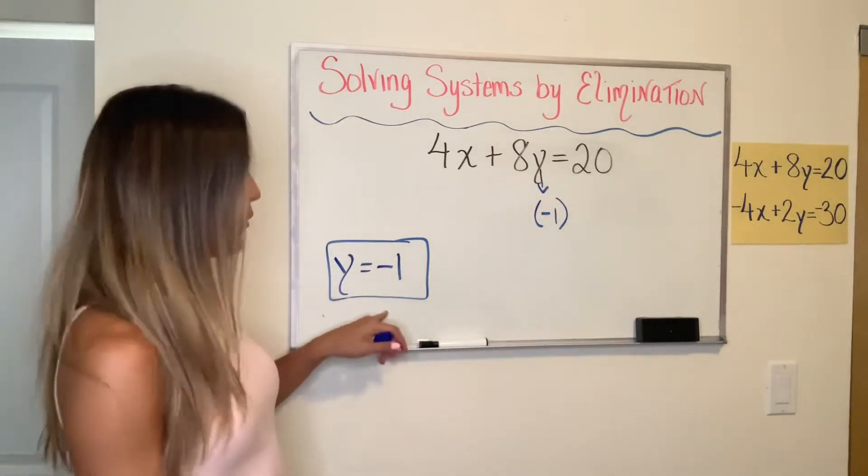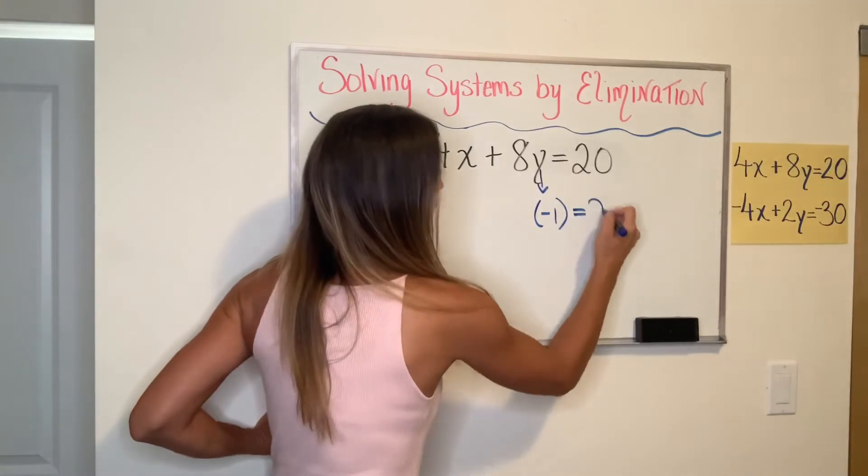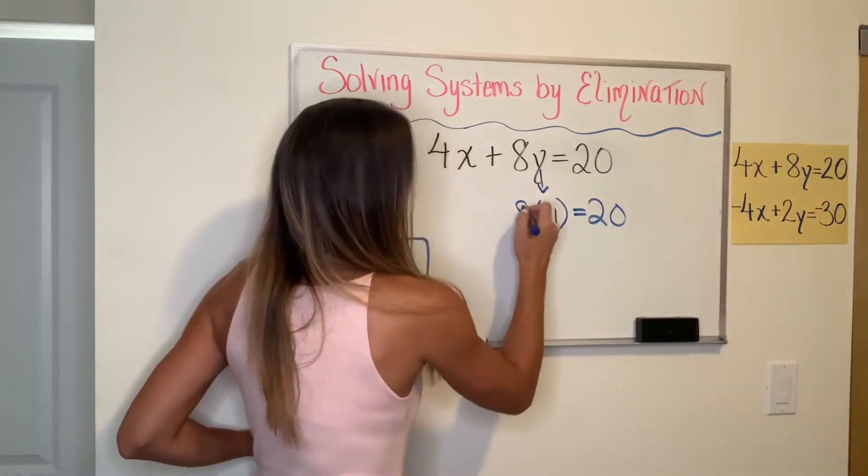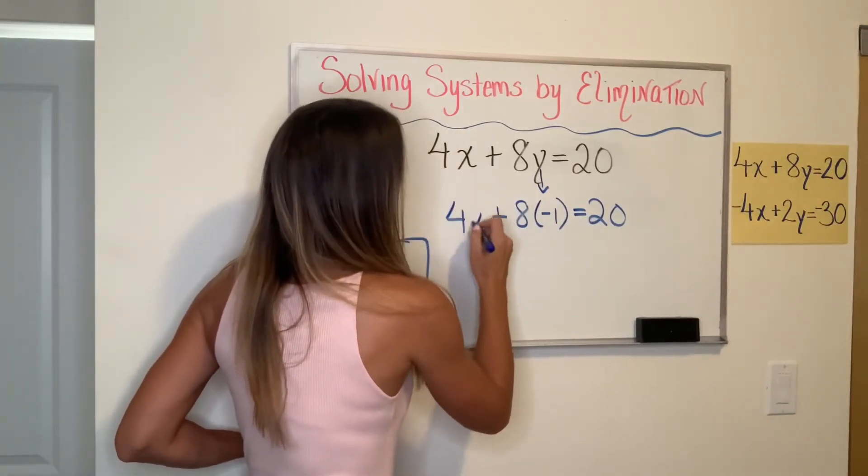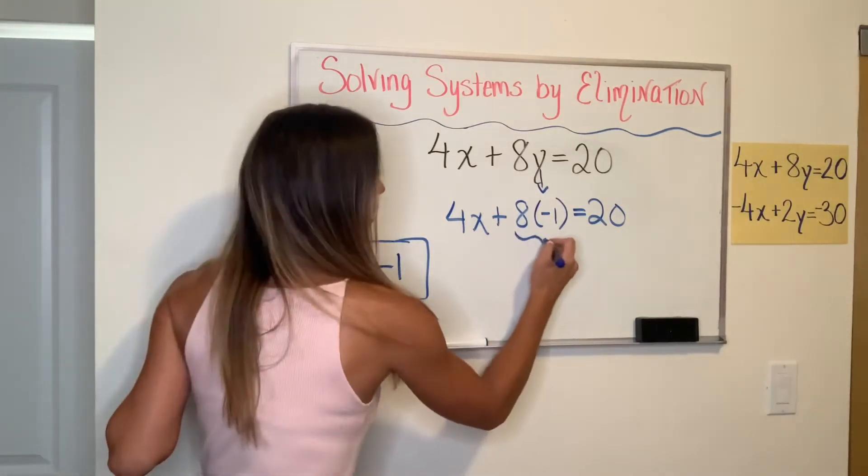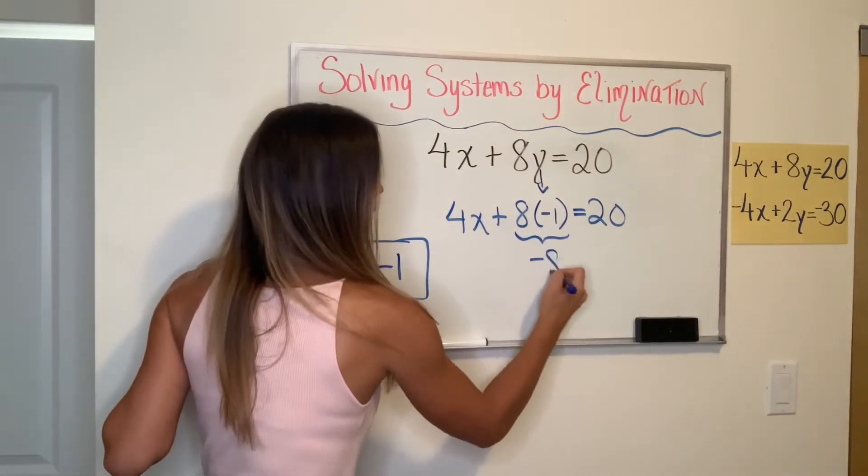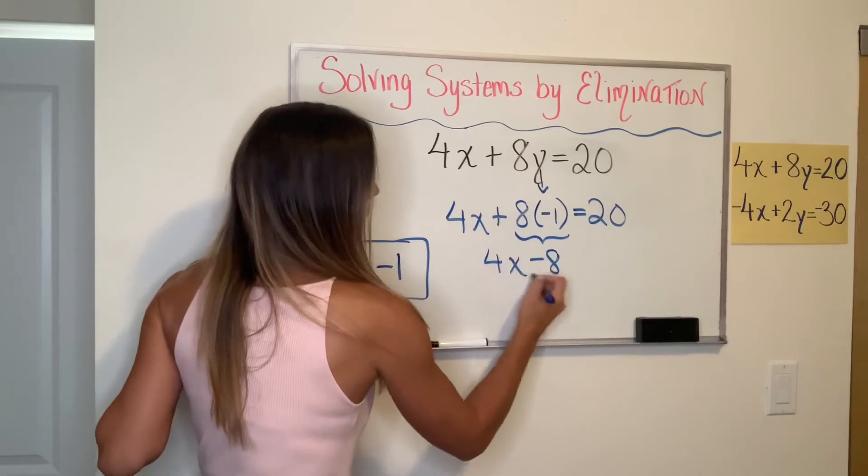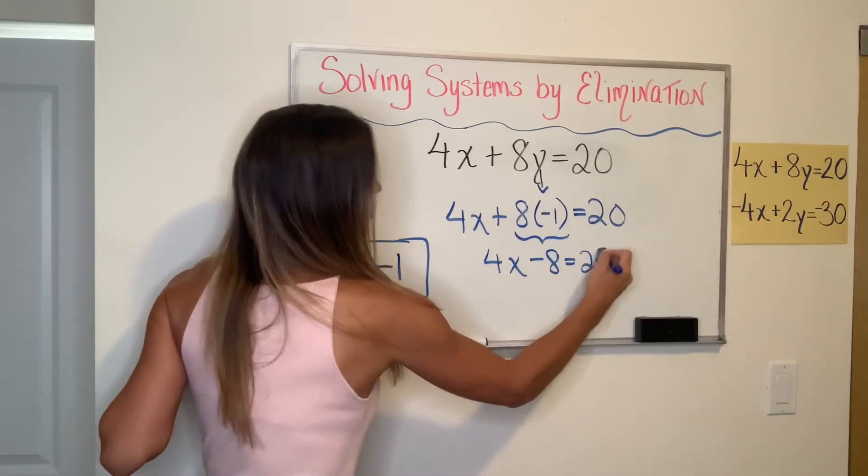So I'm going to go ahead and use that fact and substitute Y in this equation with negative 1, because I found out that's what it's equal to. Everything else in this equation is going to come down exactly as is. And I'm going to solve for X now. So if I evaluate this part right here, 8 times negative 1 is negative 8.